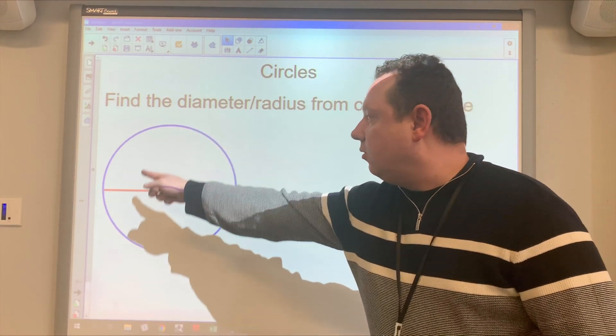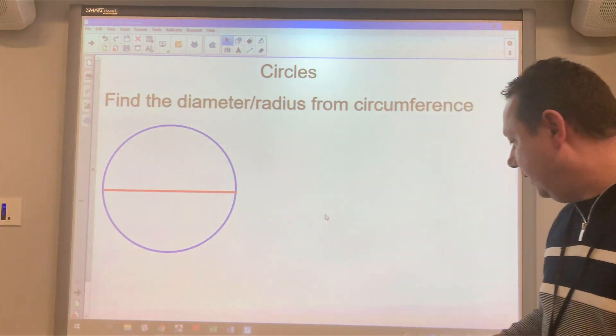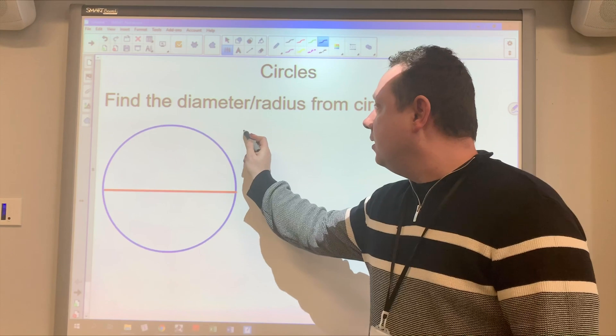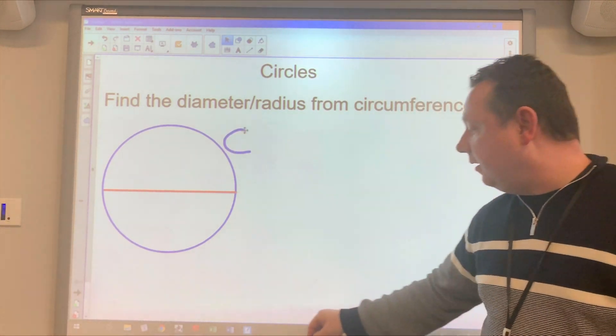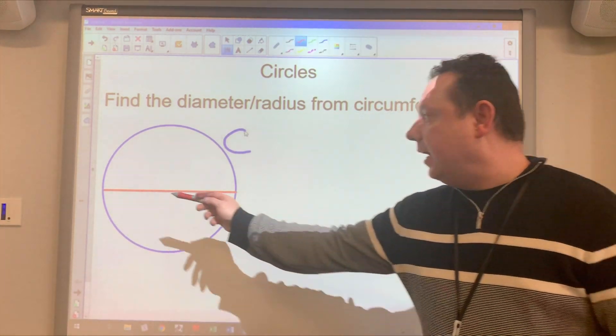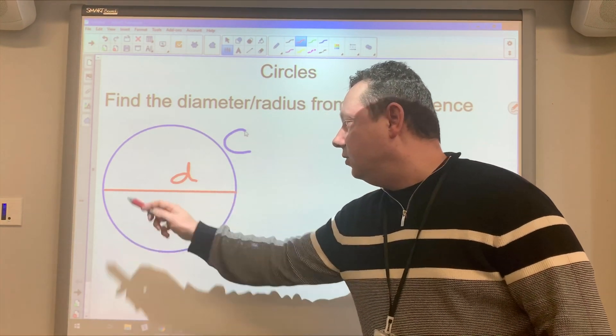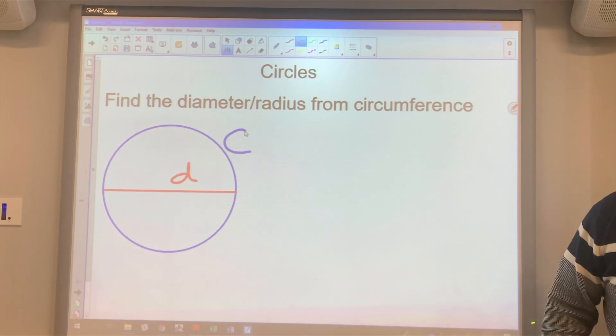So obviously we've got a circle here in blue. The distance all the way around the outside of a circle is called the circumference. I'll label that C and in red I have written the diameter in. That's the line that goes through the middle from the outside and I'll label that D.